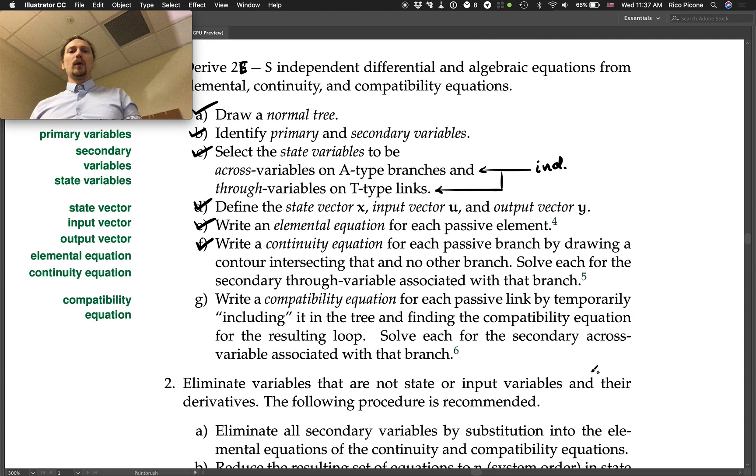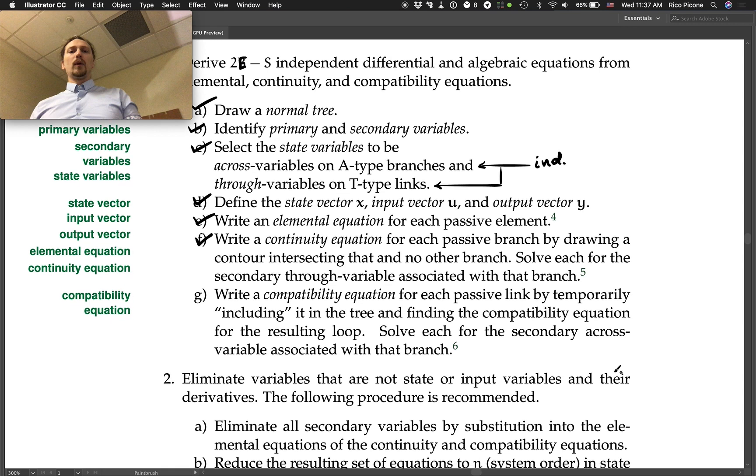Step g: Write a compatibility equation for each passive link by temporarily including it in the tree and finding the compatibility equation for the resulting loop. Every time we put a link into the normal tree it creates a loop. We do the KVL for that loop or the compatibility equation for that resulting loop and solve that for the secondary across-variable associated with that link.